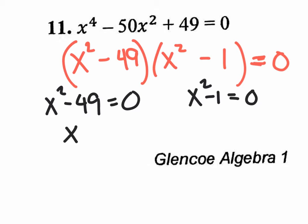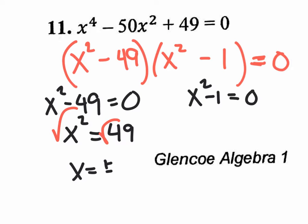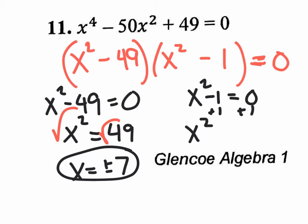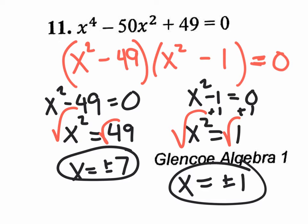If you split them, you'd have x squared minus 49 equals zero and x squared minus one equals zero. Solving the first: add 49 to both sides to get x squared equals 49, then take the square root to get x equals plus or minus seven. On the second: add one to get x squared equals one, apply a square root, and you get x equals plus or minus one. So you get four answers: positive seven, negative seven, positive one, negative one.